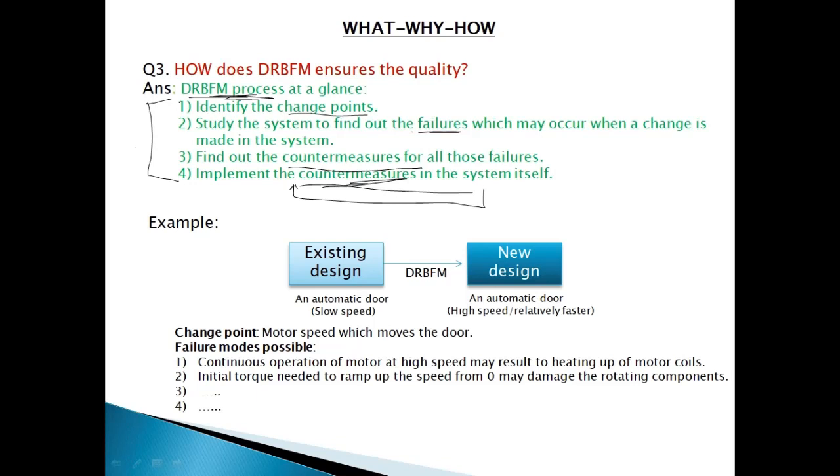The only thing that we need to take care of is that the steps are followed properly. There should not be any design change or the change point that is left out. There should not be any failure or the impact of change point that should be neglected. And there should be no bug or no loophole in the countermeasures being implemented. Basically, the countermeasure should be a foolproof one. If there is a bug in countermeasure, then of course the design change will lead to some failure. But if the countermeasure is foolproof, the failure modes have been properly identified and the change point have been studied and identified properly, then DRBFM will ensure quality. There is no way that the DRBFM will fail if it is implemented properly. The only thing we need to take care of is to follow these four steps with full dedication and accuracy.